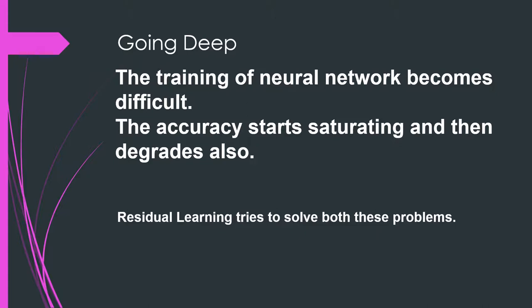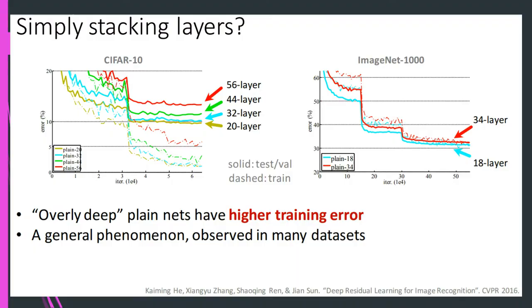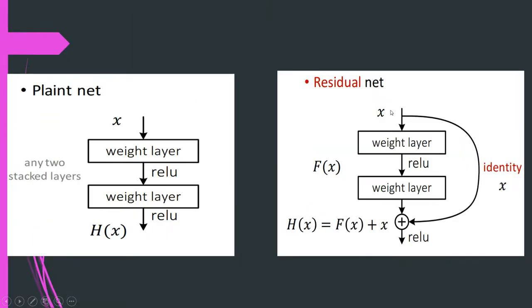If you simply go deep, accuracy starts saturating and also degrades. To understand this problem, look at results on CIFAR-10 and ImageNet: as the number of layers increases from 20 to 30 to 44 to 56, the error rate also increases. The same is seen on ImageNet with plain networks.